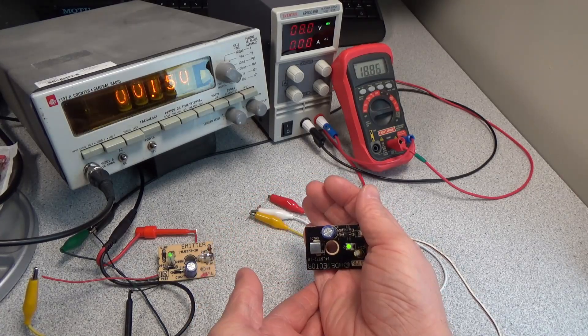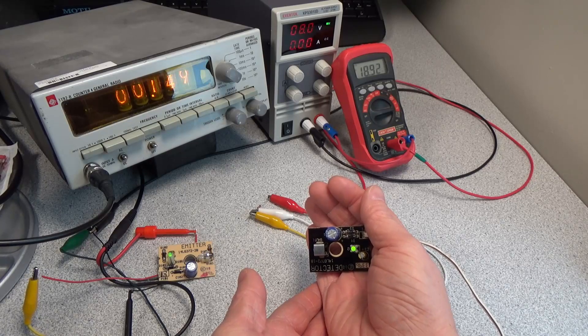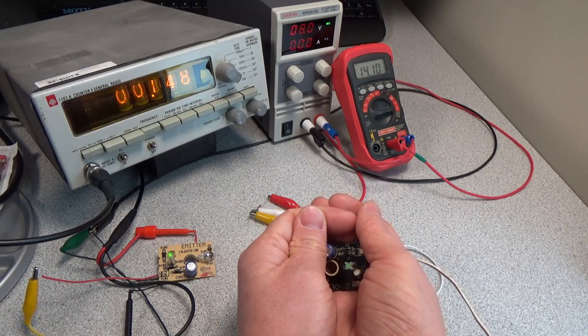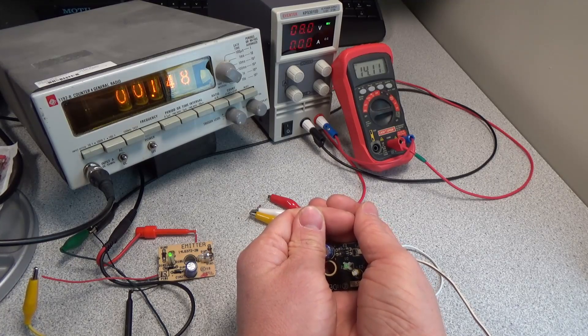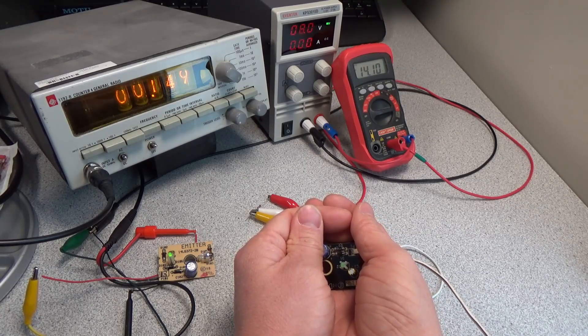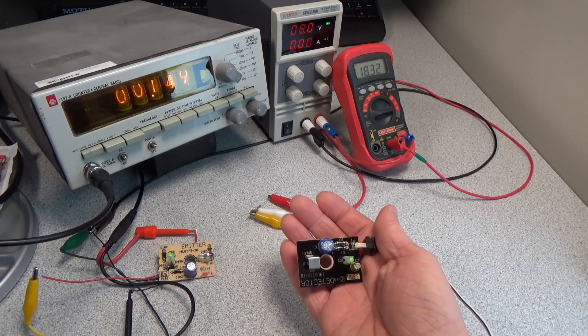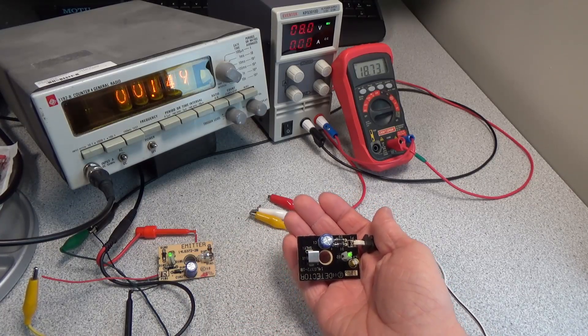We can make this detect - you can see we're using about 18 or 19 milliamps. Then I can make it not detect by shielding it from the emitter, and now we're using 14 milliamps. The garage door opener is detecting that difference in current to tell whether the door path is blocked or not.